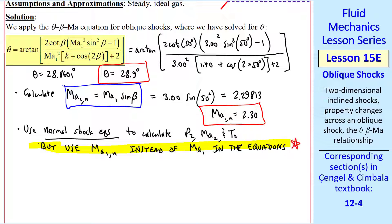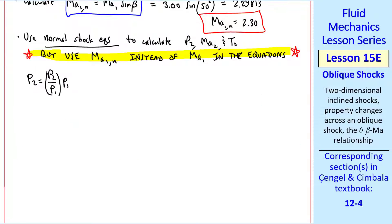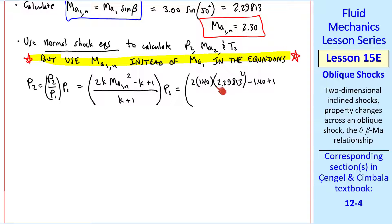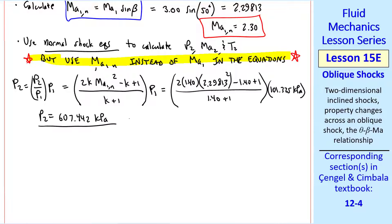To get P2, P2 equal P2 over P1 times P1. And this equation in parentheses is our pressure ratio across a normal shock. But notice that we use MA1N instead of MA1. I plug in the numbers. Using these six digits to avoid roundoff error, I get this value, and I give my answer again to three significant digits.